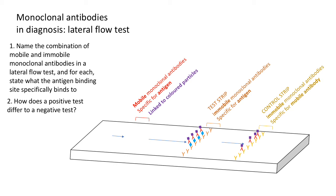In a negative test, the only difference is there is no antigen — or very little — in the sample. So no antigen binds to the mobile antibody, meaning no mobile antibody can form a complex with the immobile monoclonal antibody at the test strip. You don't get a line at the test strip because the mobile antibody linked to the coloured particle doesn't bind there — you only get a control line. That's a negative test.